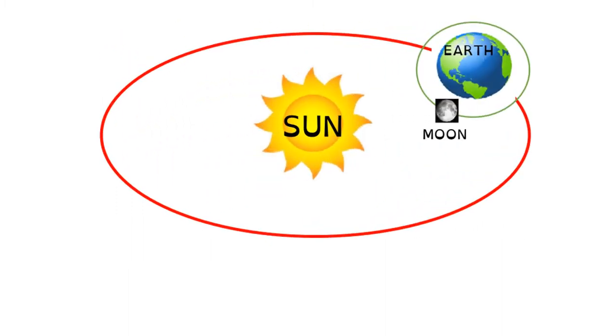If you take a look at the picture, you can see the Sun, the Earth, and the Moon. The red line shows us how the Earth moves around the Sun. And the green line shows us how the Moon moves around the Earth.